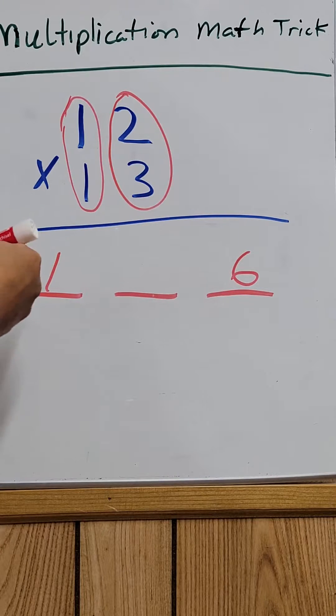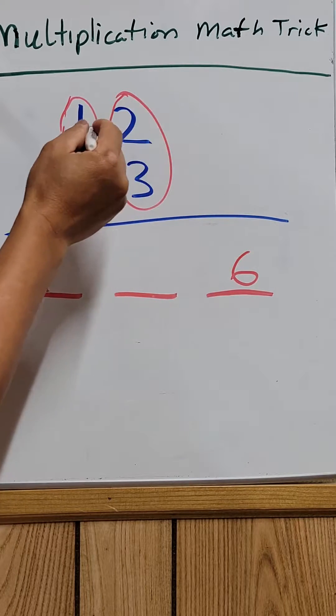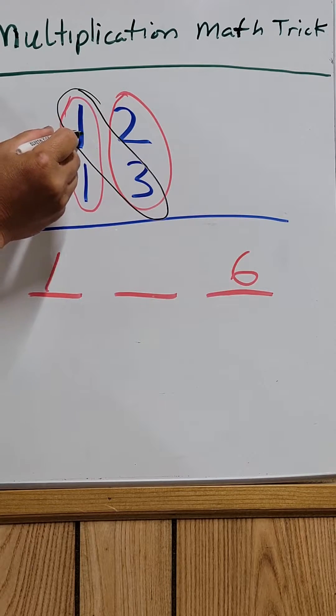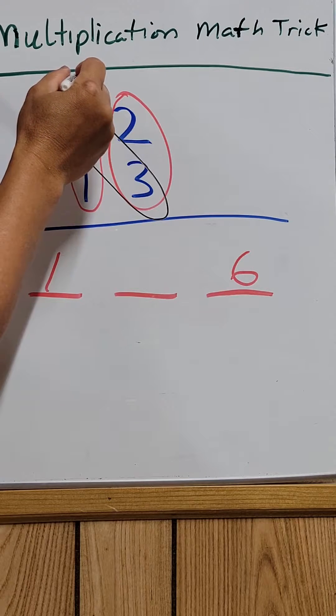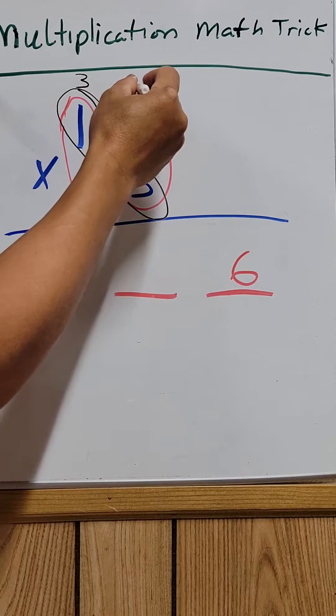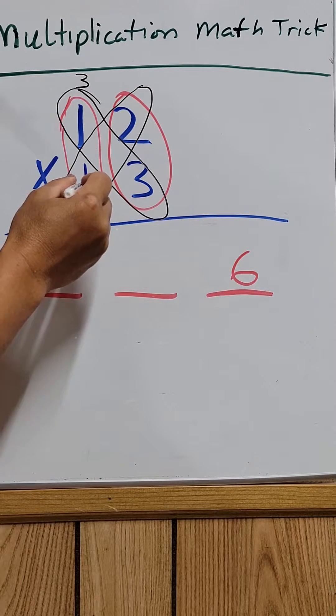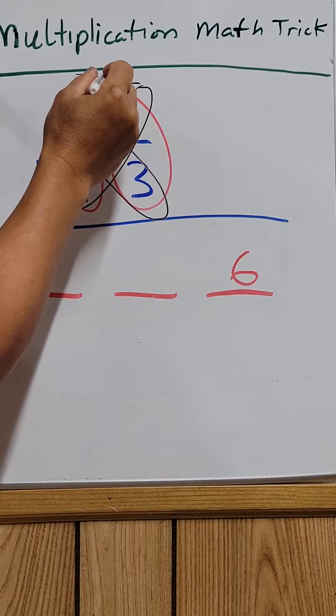And then you try to find the middle number. So to find the middle number, you have to do like this. Multiply 1 times 3 equals 3. And then multiply this number, 1 times 2 equals 2. And then you add the two numbers together.